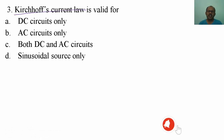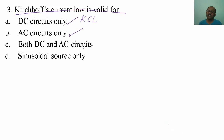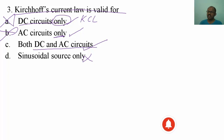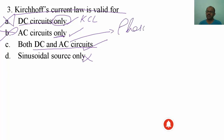Third question: Kirchhoff's Current Law is valid for — DC circuits only, AC circuits only, both DC and AC circuits, or sinusoidal circuits only? Option A says only DC — that is wrong. Option B says only AC — that is also wrong. Kirchhoff's Current Law and Kirchhoff's Voltage Law are applicable for both DC and AC circuits. In DC you have only magnitudes, but in AC you also deal with phasors in steady state response. So option C is correct.